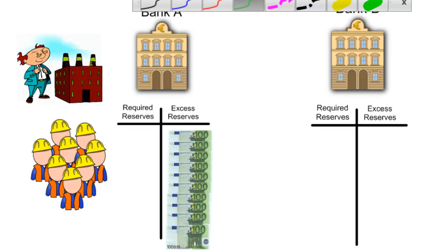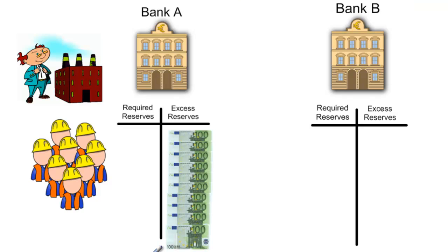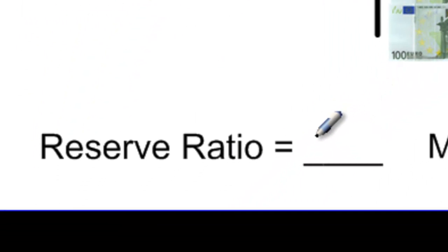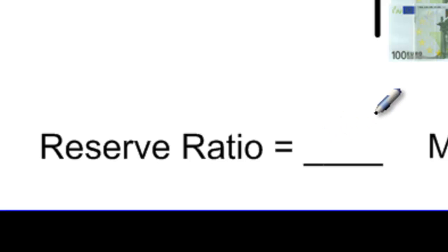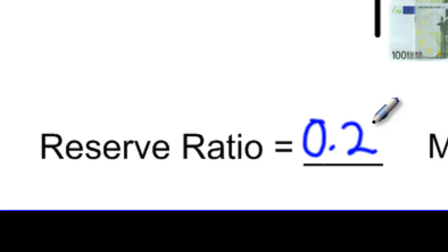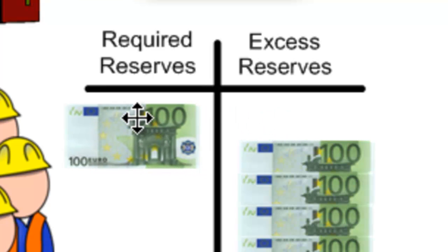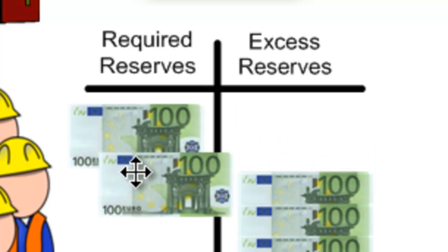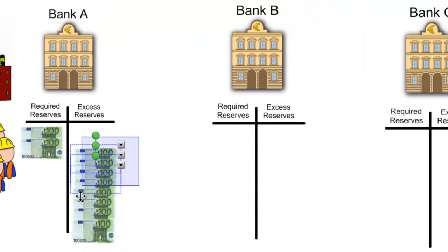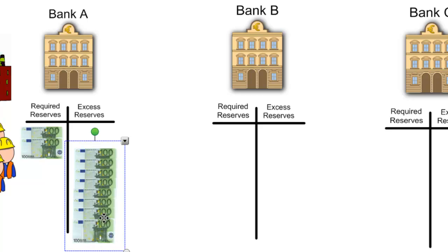Now we have to ask: what is the reserve requirement in this economy? In other words, of this 1,000 euros, how much is required to be put into reserve? Let's assume that the ECB — the European Central Bank — has set a reserve ratio of 0.2. This means that 20% of all commercial banks' deposits must be kept in reserve at the European Central Bank. So of the 1,000 euros deposited, 200 euros must be kept on reserve, leaving 800 euros in the bank's excess reserves.